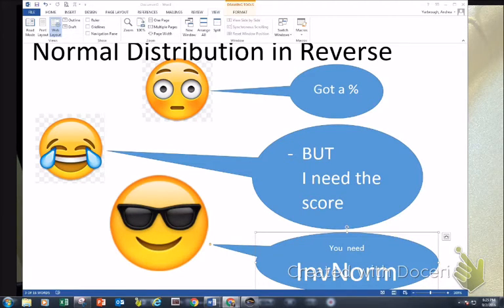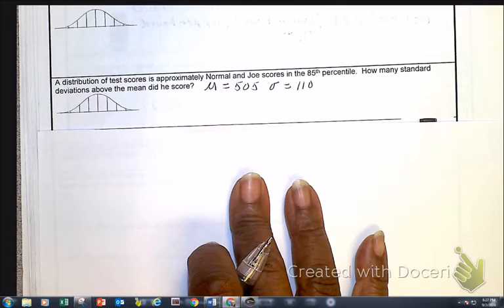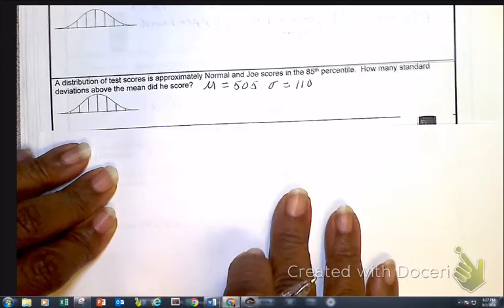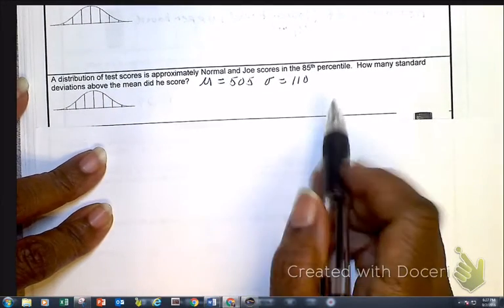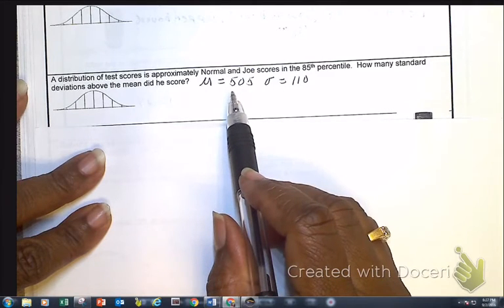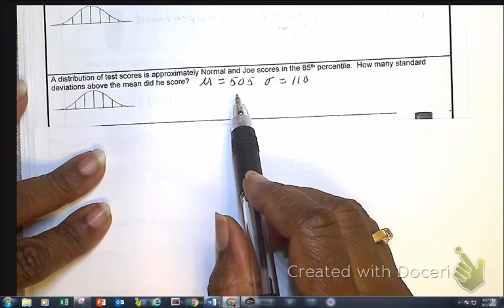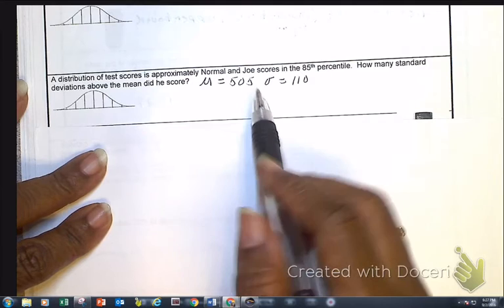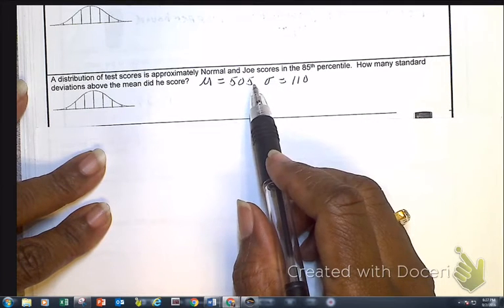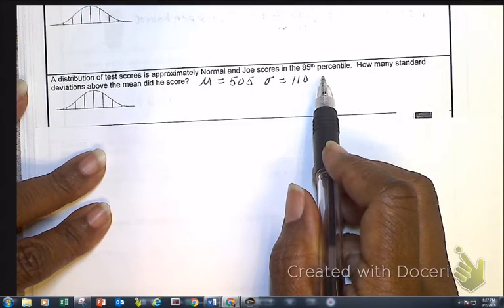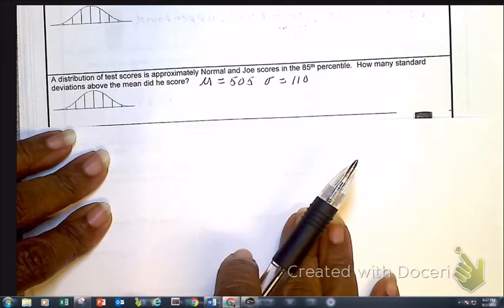Which takes us to the objectives. We are going to be looking at the normal distribution in reverse, called inverse norm. Now I want you to turn to page 14 of your notes. I want to knock out this problem right here about the verbal SAT scores. We didn't finish this in which Joe's scores at the 85th percentile and we want to find out what his actual score is.